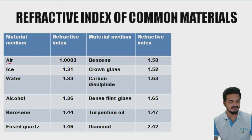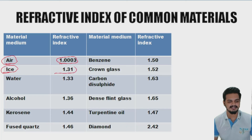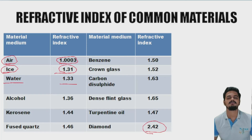Let's look at the refractive indices of common materials. The refractive index of air is approximately 1.0003 — very negligible. Ice has a refractive index of 1.31. Water is 1.33. You can go through the full table later. Notably, diamond has a very high refractive index of 2.42.